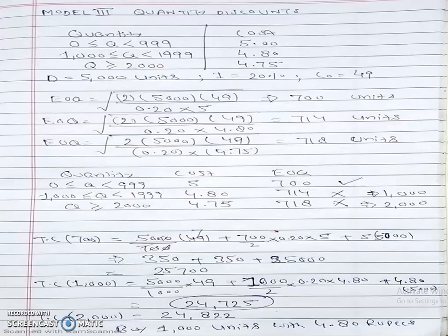Today we are discussing model number III, a deterministic type model in which we take into account quantity discounts. I'll use a numerical example to help you solve this type of problem, where a supplier provides a certain discount over a certain ordered quantity.